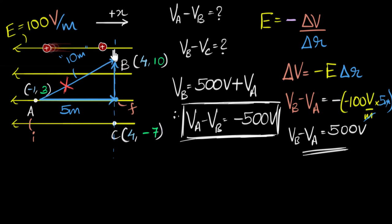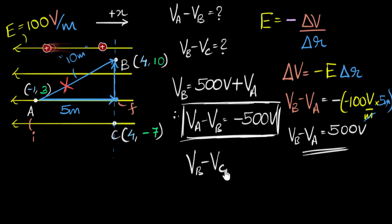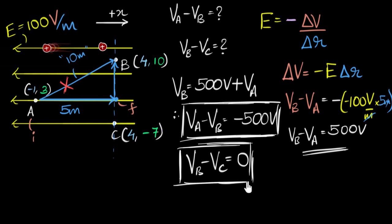What about VB minus VC? Points B and C lie on the same equipotential surface — they are at the same potential, so the potential difference between them is zero. Using the formula confirms this: delta R along the field is zero because B and C have the same x-coordinate, giving delta V = 0.